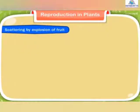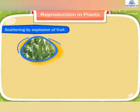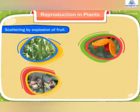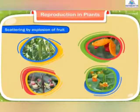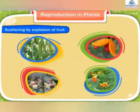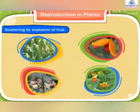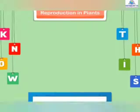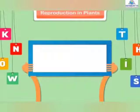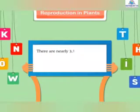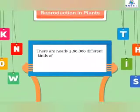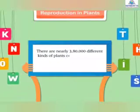Scattering by explosion of fruit. Some fruits like pea, balsam, geranium, and touch-me-not plants explode on drying. Their seeds are thrown out and scattered away from the parent plants. There are nearly 3,80,000 different kinds of plants on the earth.